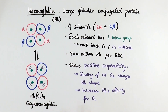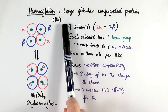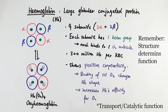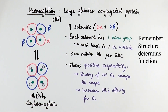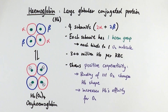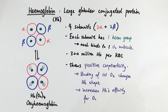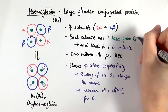Haemoglobin is a large globular conjugated protein. It's globular because of its shape, indicating it has a transport function. Other examples of globular proteins include enzymes, whereas fibrous proteins are structural proteins. It's described as conjugated because it is bound to an inorganic group — in this case the heme group, which contains iron. That's also why our blood appears red, because iron itself is red in colour.